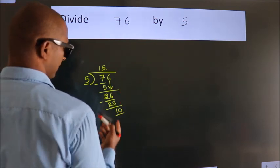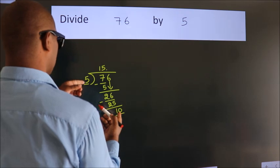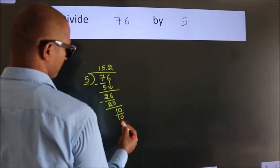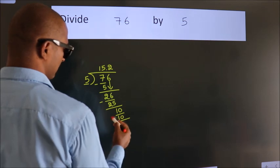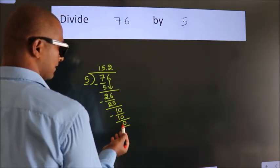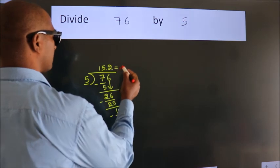So, 10. When do we get 10? In 5 table. 5 2s 10. Now, we subtract. We get 0. We got remainder 0. So, this is our quotient.